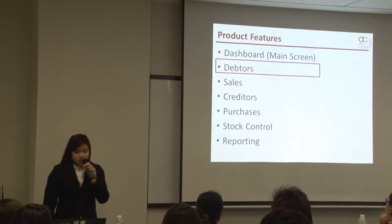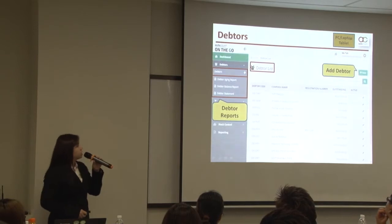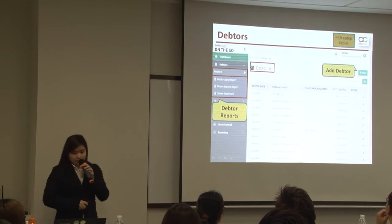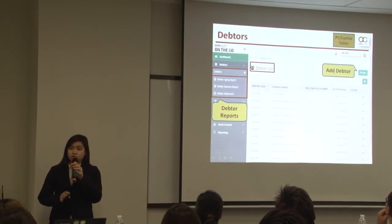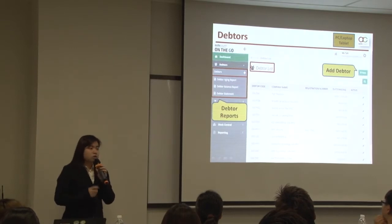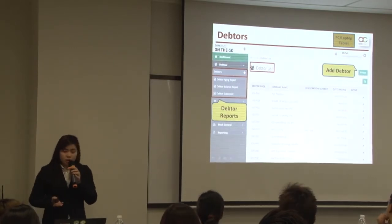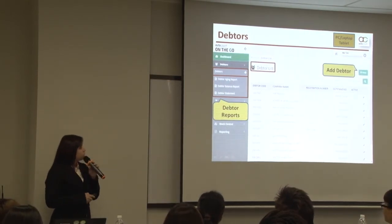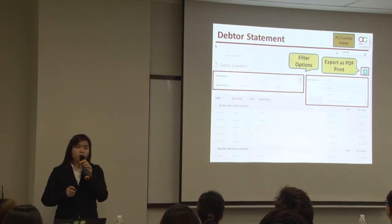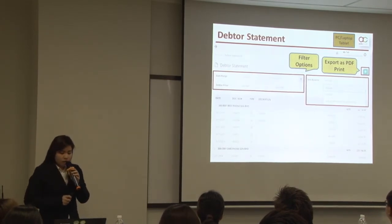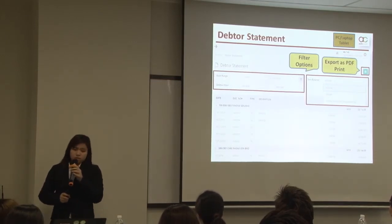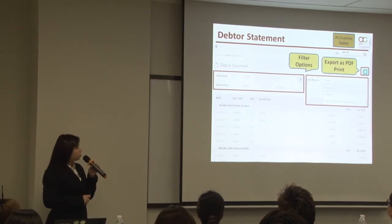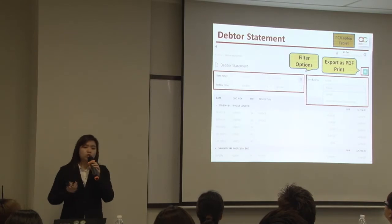The second feature is Debtors. You can click on the new button to add debtors. You can also generate debtors reports such as the Debtors Statement, Debtors Ageing Report, and also the Debtors Balance Report. The Debtors Statement Report has the same function as in AutoCount Accounting — you are able to use filter options, export, and also print out the report.